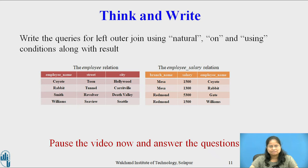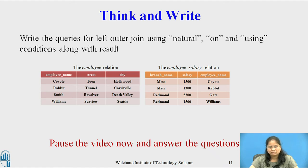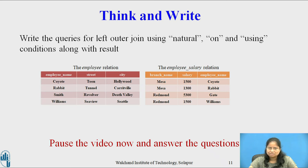We have now considered left outer join using join conditions natural, on, and using. Now pause this video, reflect on the following question for a minute or two, and write your response. The question is: write the queries for left outer join using natural, on, and using conditions along with the result for the employee relation with attributes employee name and city, and the employee salary relation with attributes employee name, branch name, and salary. The salary information is missing for some employees in the employee salary relation, and employee information is missing for some employees in the employee relation.